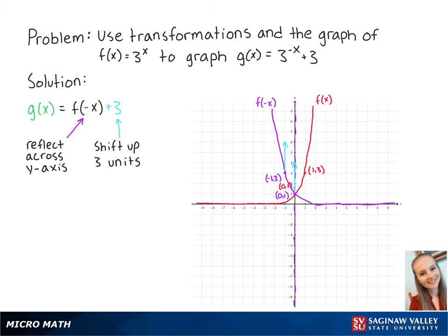Adding 3 to the function means that we will shift the new graph 3 units up. Also notice that the asymptote on the x-axis also shifts up 3 units.